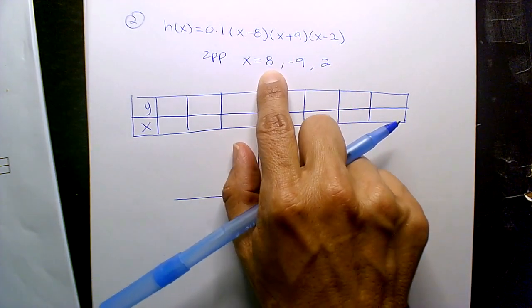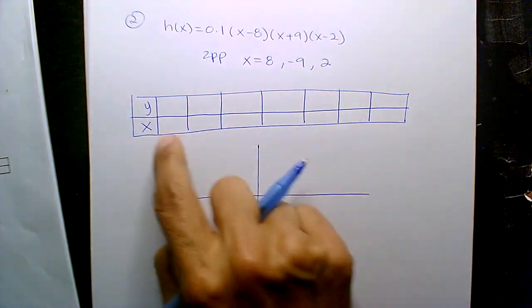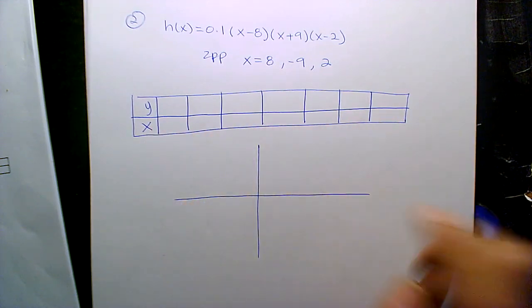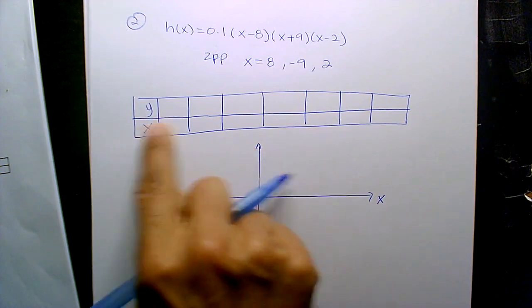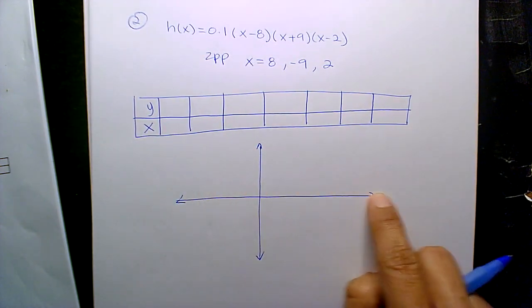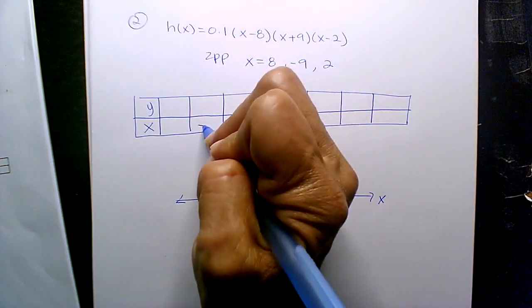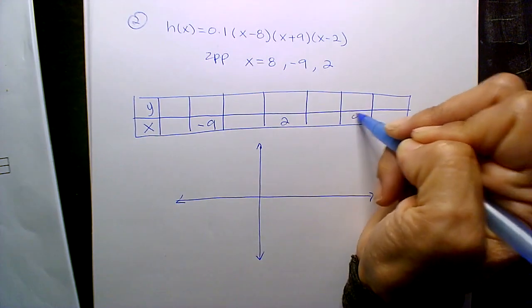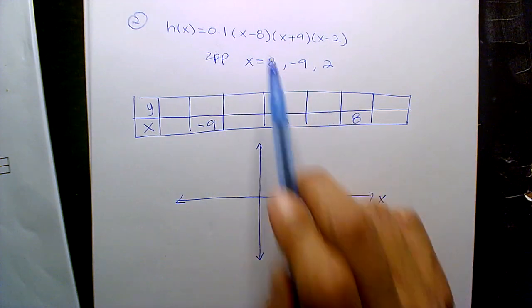When you guys get your zero product property and you switch the signs and get positive 8, negative 9, positive 2, this is supposed to replicate your x-axis. That's why your table is horizontal so that you kind of see it matching up. You want most negative to most positive. Negative 9 to 8, right? Negative 9 is the smallest, then 2, then 8.